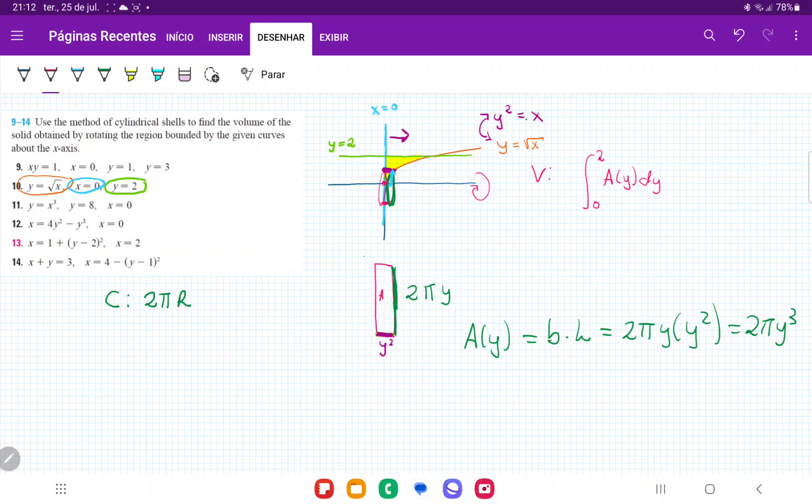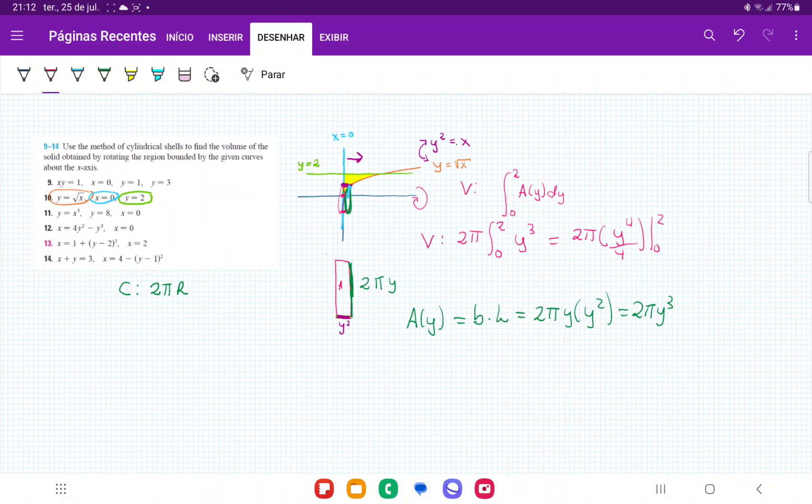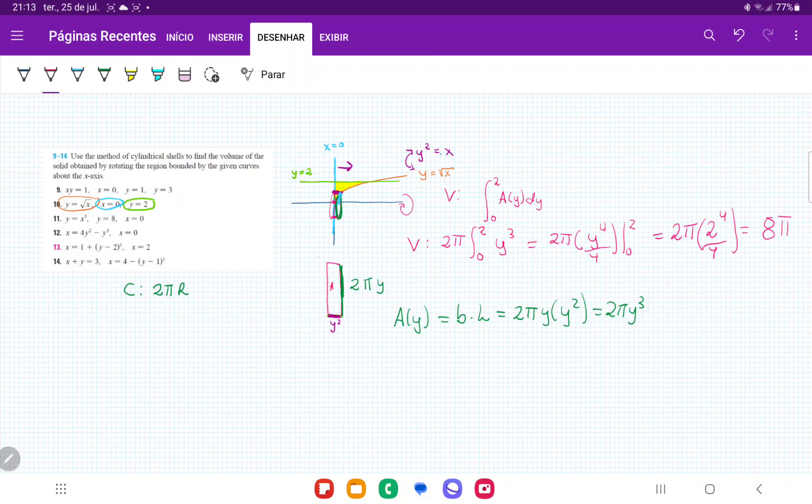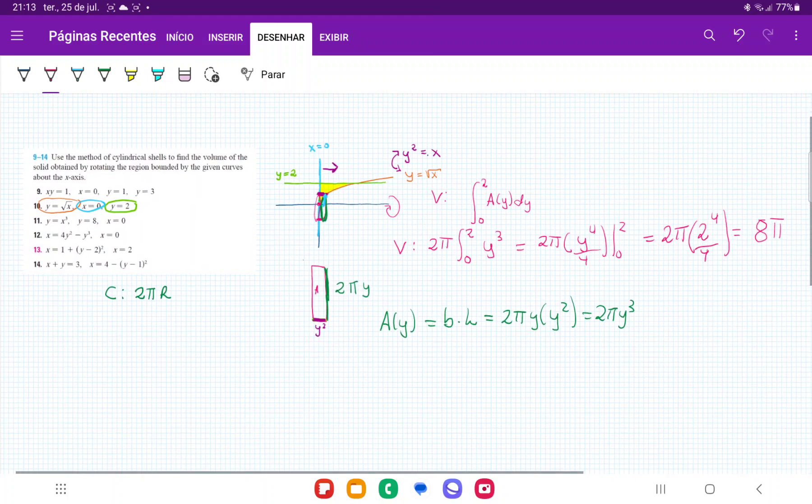So once I have an expression for my area, I can now integrate. So my volume is going to be, I'm going to put the 2π outside because it's a constant. And so the integral from 0 to 2 of y³, this is equal to 2π times y⁴/4 evaluated from 0 to 2. Now we don't need to worry about the lower boundary because it's just going to go to zero. We just need to do the upper. So this is equal to 2π times 2⁴ divided by 4, which is equal to, let's see, 2⁴ is 16 divided by 4 is 4 times 2 equals 8π. So that's the volume that we get when we take this area and rotate it about the x-axis using the shell method.